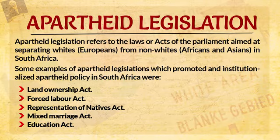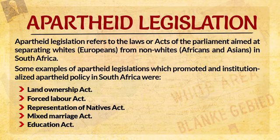These laws were many. Some examples of the laws or legislations which promoted apartheid policy in South Africa were the Land Ownership Act, the False Labour Act, the Representation of Native Act, the Mixed Marriage Act, and the Education Act. There were some other ones, but these are the ones we shall focus on in this discussion. Now let's look at the Land Ownership Act.